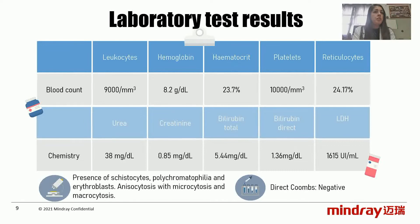Upon admission, the complete blood count performed on the Mindray 6800+ hematologic analyzer showed leukocytes within the reference interval for age and sex, with decreased hemoglobin, hematocrit, and platelets, and increased reticulocytes. The equipment triggered an alarm for red blood cell fragments, which should be investigated in the peripheral blood smear. The Mindray also provides a percentage of these cell types, but it is a research-use parameter. In the peripheral blood smear, the presence of schistocytes greater than 1%, polychromatophilia, and erythroblasts was noted.